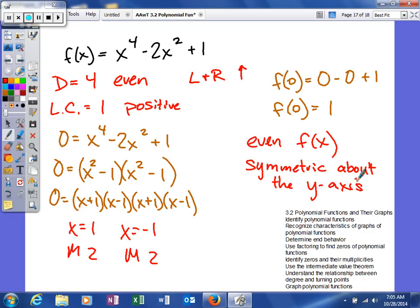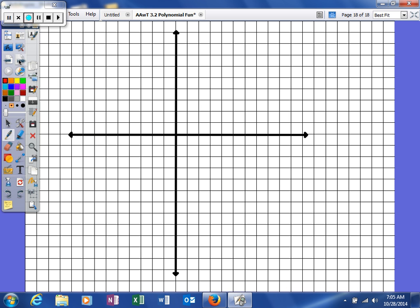And the reason this helps us is because it will allow us to plug in basically half the points and get twice the information. So let's use that information to help us graph. First thing we're going to do is plot our two x-intercepts, so negative one and positive one. We can also plug in our y-intercept, which is zero comma one.